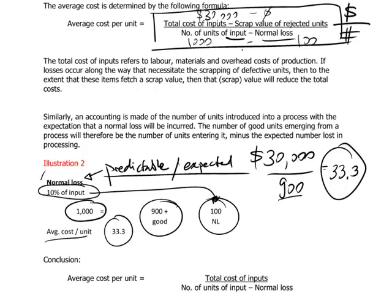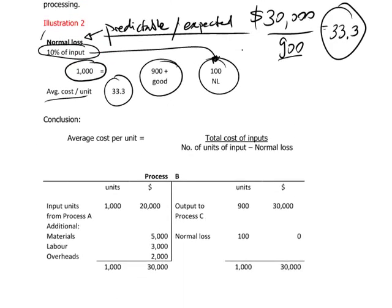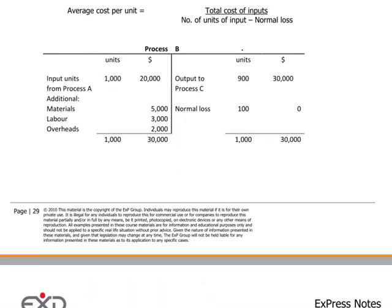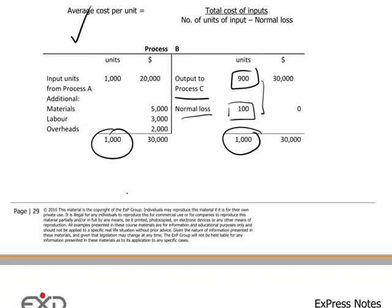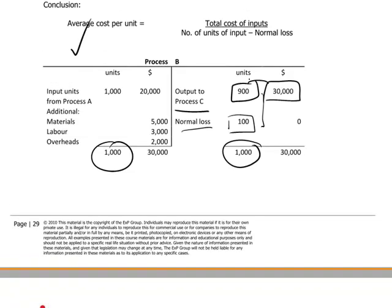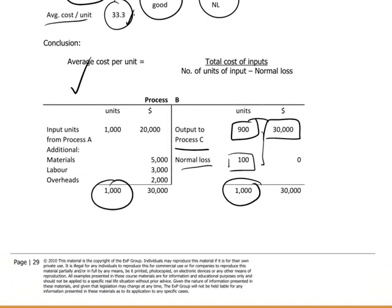So we can set up a process account now to reflect the normal losses. The input side is exactly the same as before, but the output now is an output to process C of 900 units, and the normal loss units of 100 allow us to reconcile the number of units. The $30,000 of costs are associated with the 900 good units, giving us our average cost per unit of $33.3.